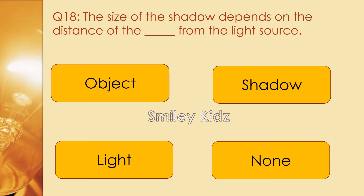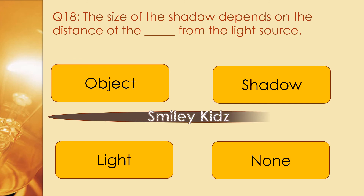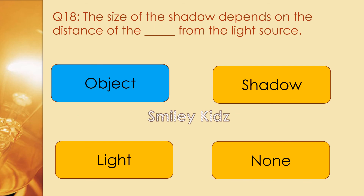Question number 18. The size of the shadow depends on the distance of the dash from the light source. Options are object, shadow, light, and none. The right answer is object. The size of the shadow depends on the distance of the object from the light source.